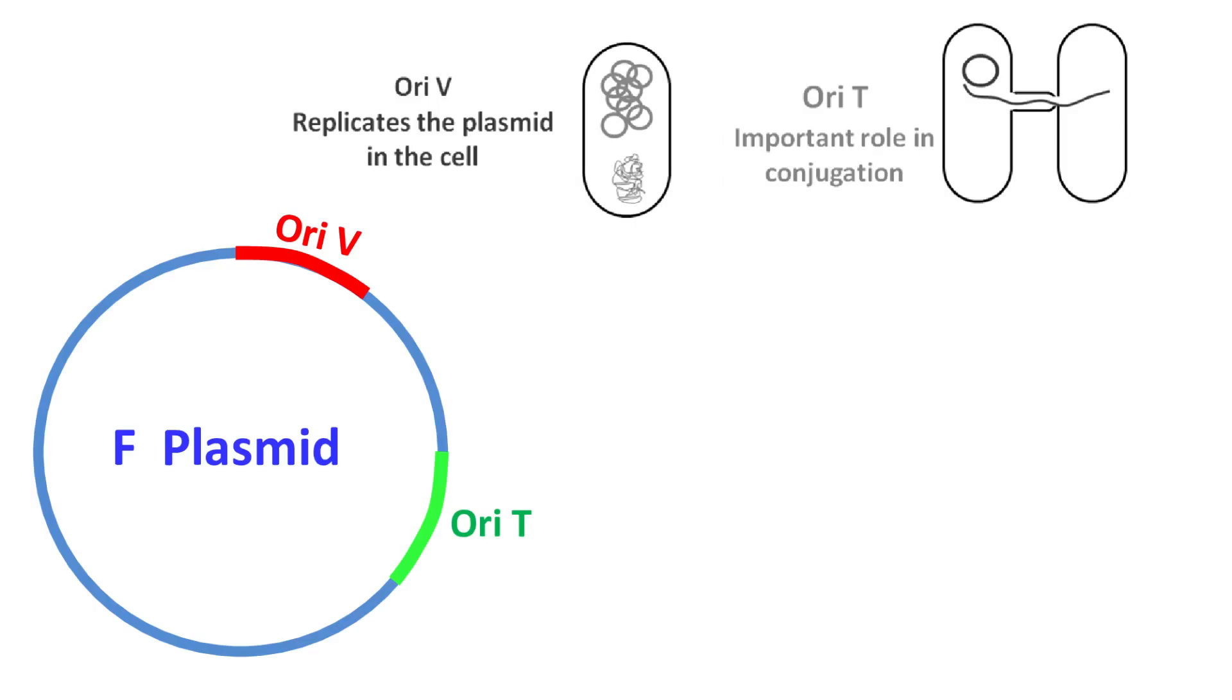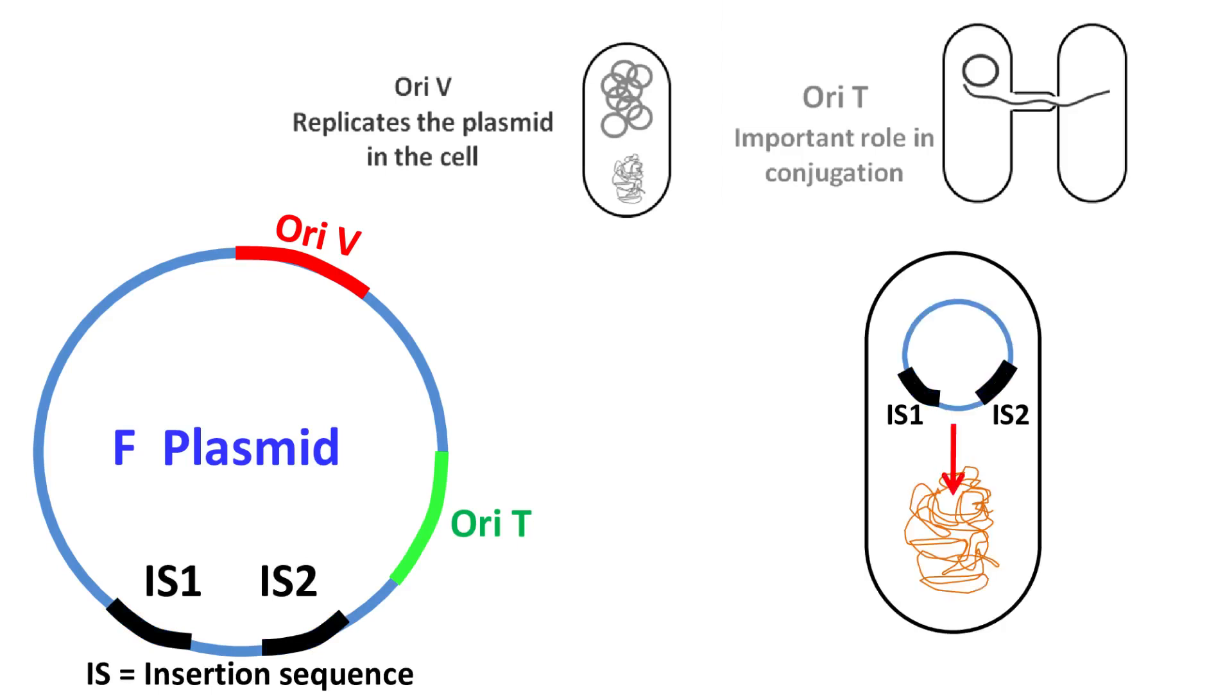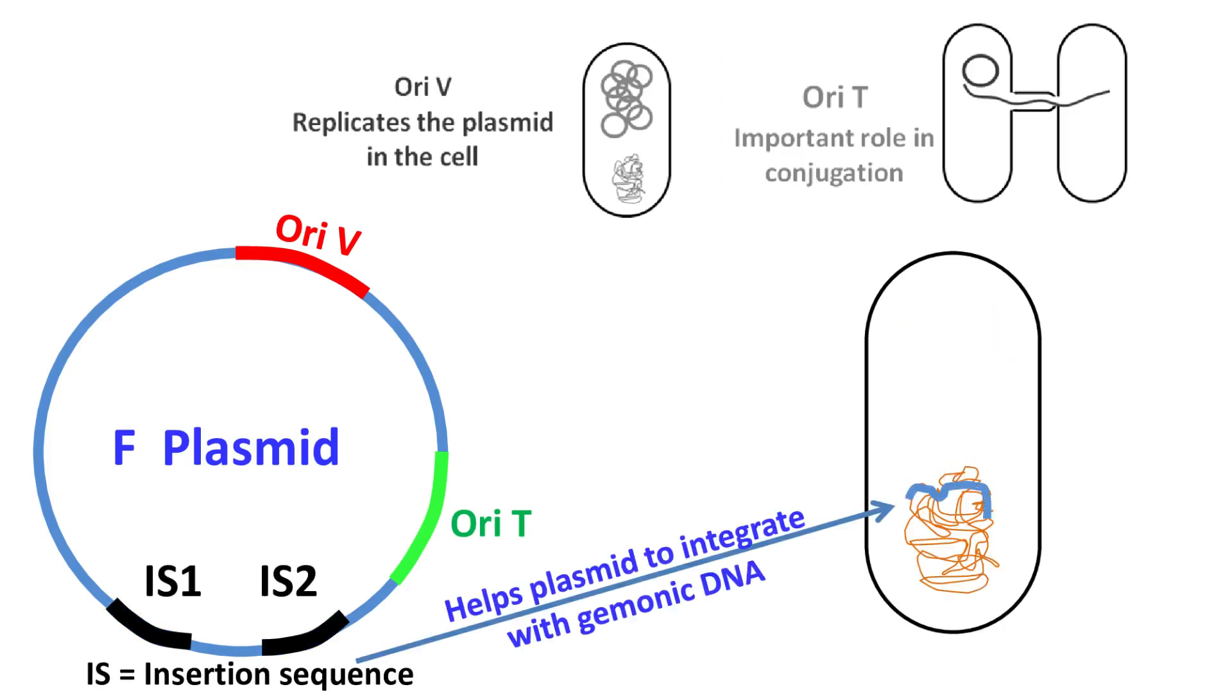The F-plasmid also has insertion sequences that help the plasmid to integrate with the genomic DNA and form an episome.